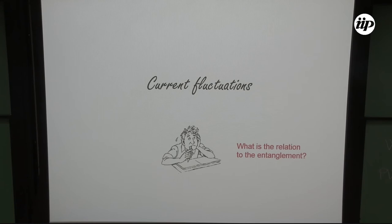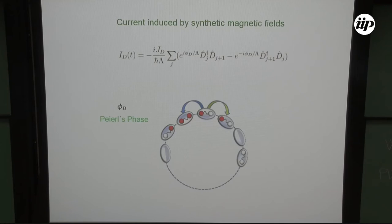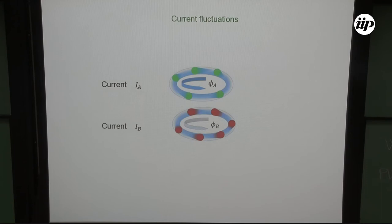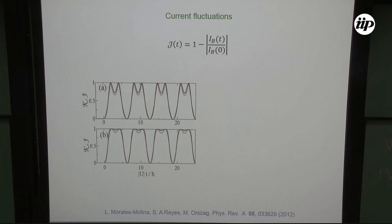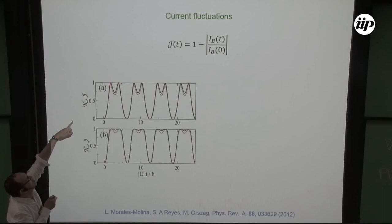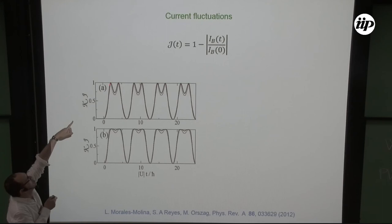Since entanglement is not an observable, we turn to another configuration: two particles of different species moving on rings. We can induce a current flux around the ring by applying a phase, which relates to the hot topic of synthetic gauge fields. When we switch on the interaction between the two particles, it obviously changes the initial current. We can compute the fluctuation of this current, and we previously found a clear correlation between the mean entanglement and this current fluctuation — including a maximum at the point where current suppression occurs.